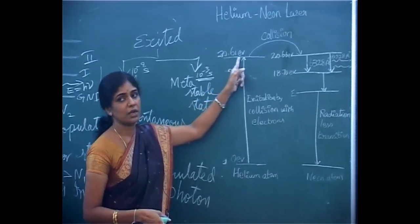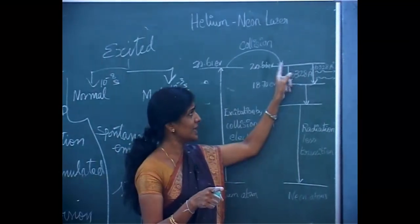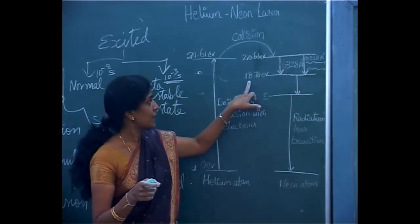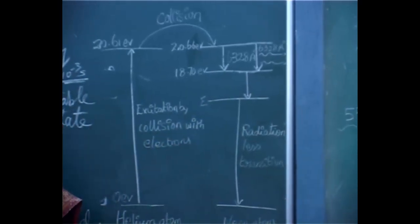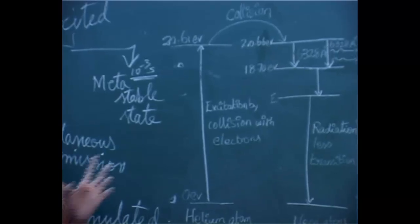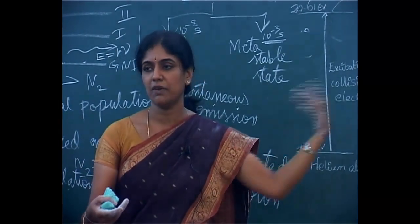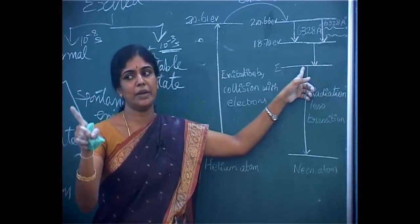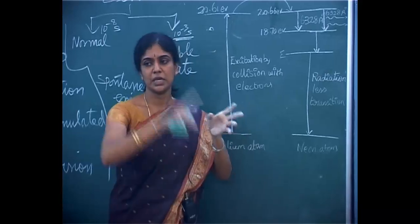The helium excited state has an energy of 20.6 eV and the corresponding neon excited state is also 20.6 eV. This is a metastable state. From this metastable state, the neon atoms lose energy and come to 18.70 electron volts. The difference in energy level is emitted as radiation equal to 6,328 Angstroms — this is the stimulated photon. The stimulated photon travels inside the discharge tube, gets reflected by the two reflecting mirrors at both ends — the same procedure as in ruby laser. It then stimulates another photon, and this goes on.